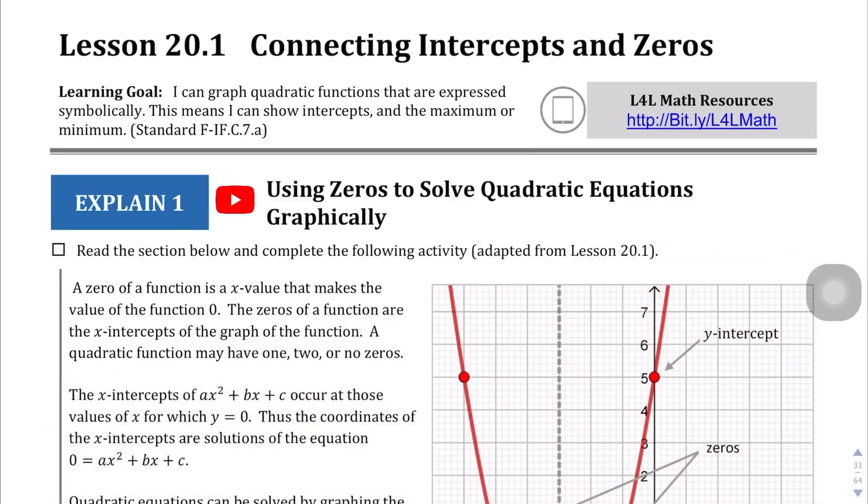We're on page 33, lesson 20.1, connecting intercepts and zeros. So far we've been talking about how to graph these quadratic functions and how to find the vertex and axis of symmetry. Now we're going to talk about some of the more distinct points that we want to keep in mind when we're graphing these, namely the x-intercepts and the y-intercepts. And the x-intercepts are also known as the solutions of the graph, if there are solutions.